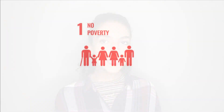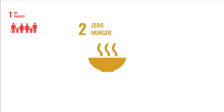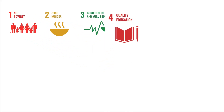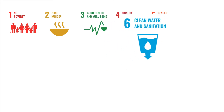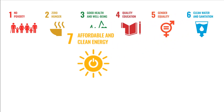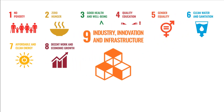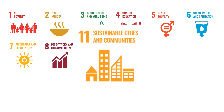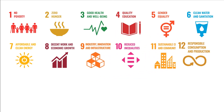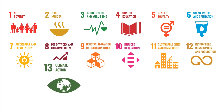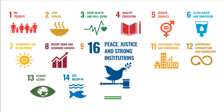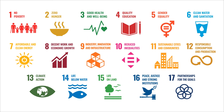To recap: in 2015, world leaders agreed to 17 Global Goals, officially known as the Sustainable Development Goals, or SDGs. These goals aim to create a better world by 2030 by ending poverty, fighting inequality, and addressing the urgency of climate change, together.